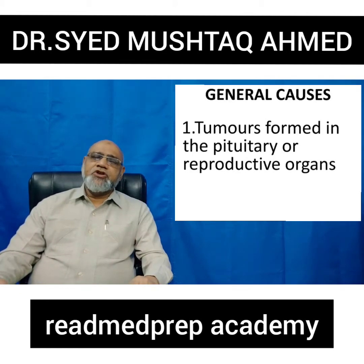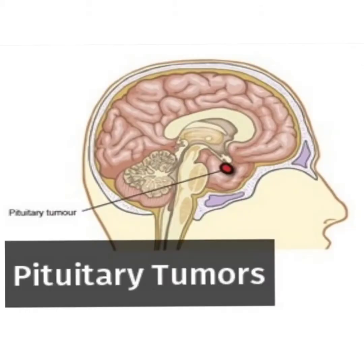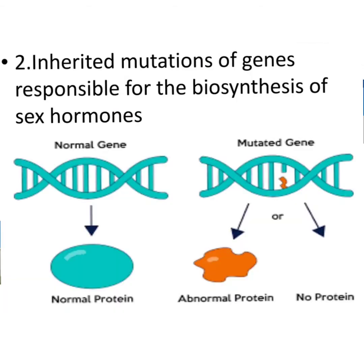What are the general causes? Number one: tumors formed in the pituitary or the reproductive organs. Number two: inherited mutations of genes responsible for the biosynthesis of the sex hormones. When the genes are in normal condition, normal protein and normal hormones are formed. When a gene becomes mutated, there is formation of abnormal protein or no protein, resulting in abnormal or absent sex hormones.